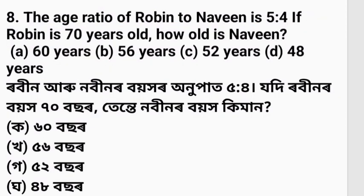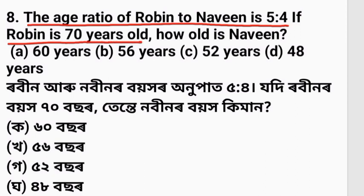The age ratio of two people is 5 to 4, and one person is 70 years old. How old is the other person?